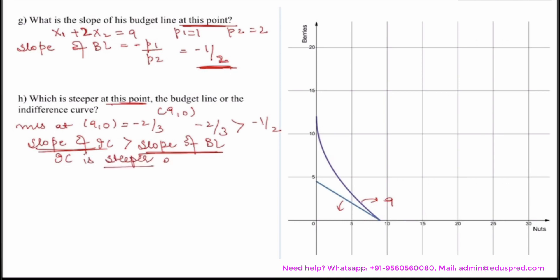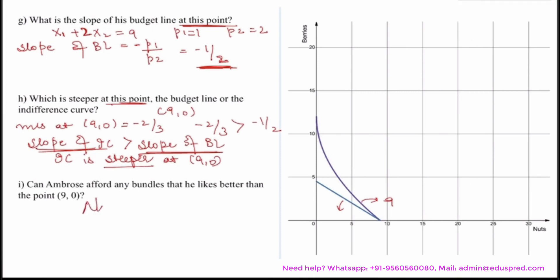Moving on to the next part: can Ambrose afford any bundles that he likes better than the point 9 comma 0? The answer is no — Ambrose cannot afford any bundles he likes better than 9 comma 0, since that point gives him the highest level of utility attainable and completely exhausts his budget.